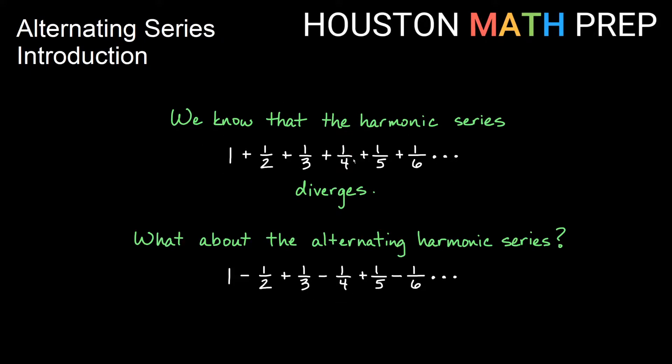With the harmonic series, we have all the terms that are positive, and we know that that diverges, and we talked about that in another video. What about something like an alternating harmonic series where we have 1 - 1/2 + 1/3 - 1/4, et cetera.